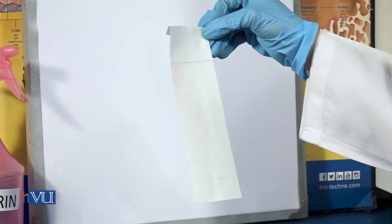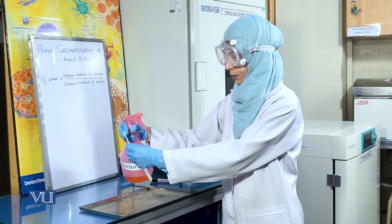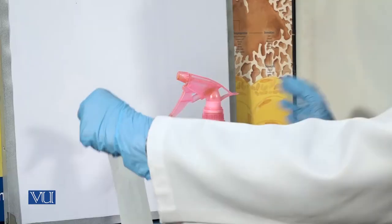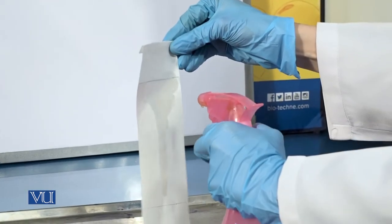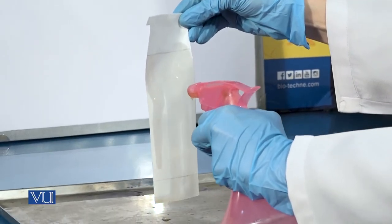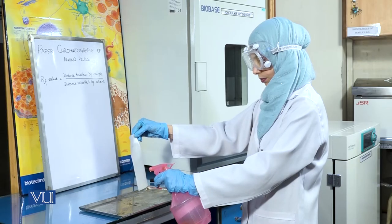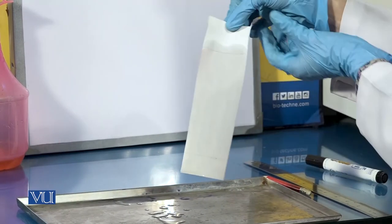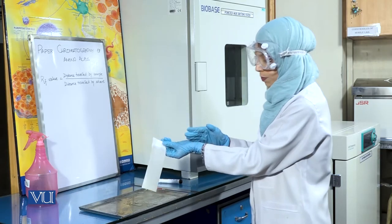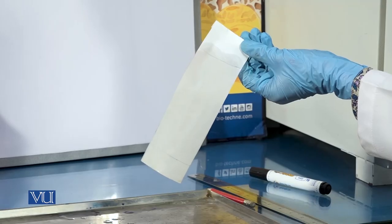Next, we will be spraying this chromatogram with ninhydrin so that we are able to visualize if the amino acids are present in this sample. We will now place the chromatogram in an oven at 95 degrees centigrade for approximately 4 to 5 minutes.